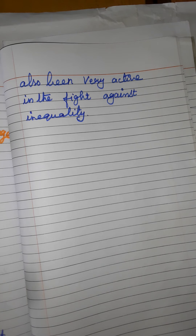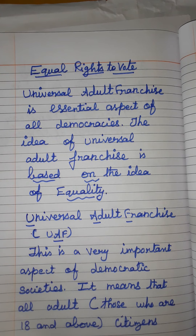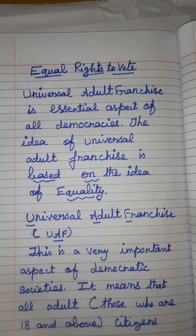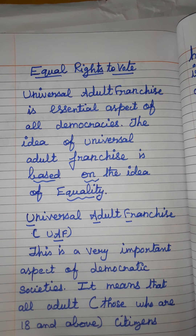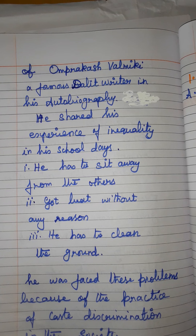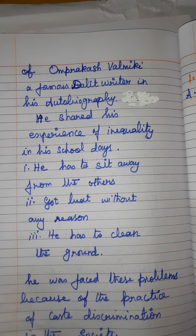There are four two-marks parts related to our subtopics. You have to read these four two-marks questions and write them for the font test. The subtopics we saw are: equal rights to vote, then Universal Adult Franchise, and inequality — with examples of matrimonial advertisements and the personal experience of Om Prakash Valmiki.